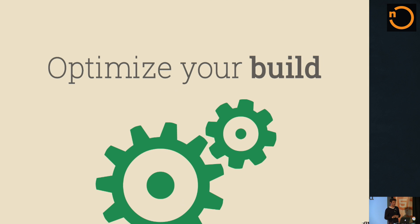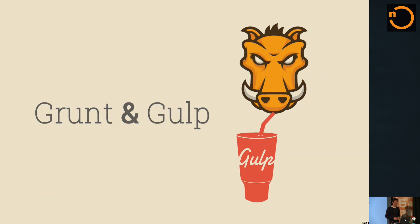Next up is optimizing your builds. There are a couple of tools out there. We had a great presentation earlier about someone who built their own tool, but there are also lots of tools that already do a lot of these things for you. The big ones are Grunt and Gulp — there's also Broccoli, and you can even use Make. It's not about which tool you use, it's more about which tool actually works for your team, as they do things in a slightly different way.